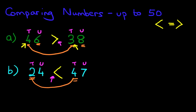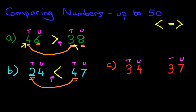Now we're going to work through one more example, because what we want to do is look at a case where the tens are the same. Let's suppose we have 34 and 37. We're going to compare the numbers — which is larger and which is smaller? Using the same method, the 4 is a unit and the 3 is a ten for 34; the 7 is a unit and the 3 is a ten for 37.